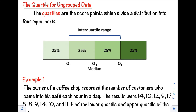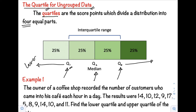Hi class, welcome back to our channel. For this video I will show you how to find the quartile for ungrouped data. The quartiles are the score points which divide a distribution into four equal parts. As you can see in our figure, we use three quartiles to divide the distribution into four: Q1 is the first quartile or lower quartile, Q3 is the third quartile or upper quartile, and Q2 is the same as our median — that is our second quartile.